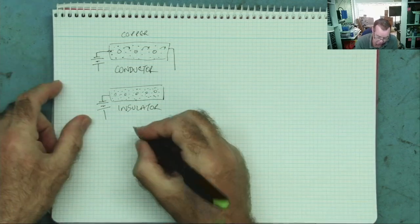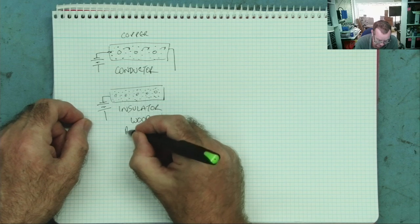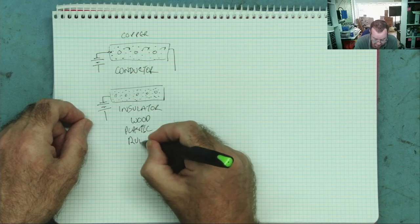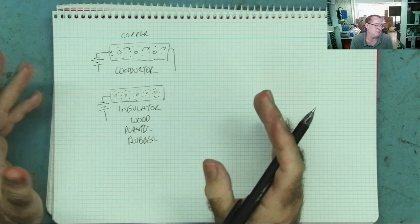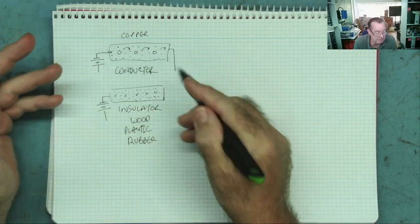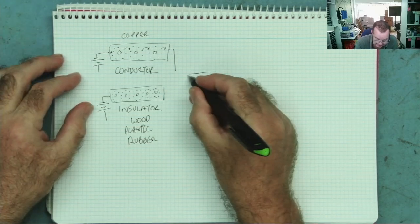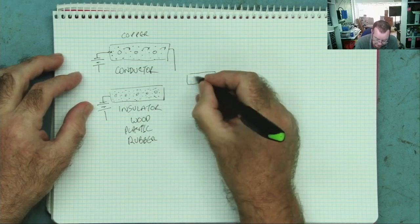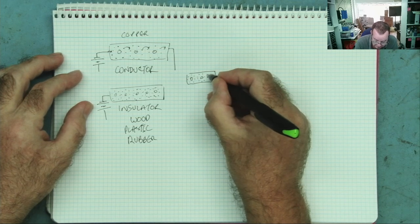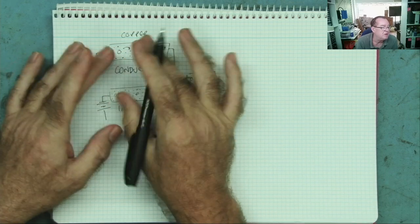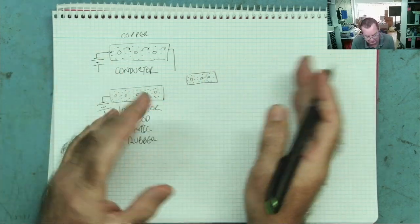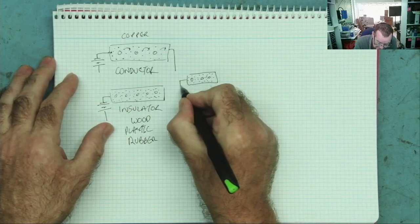Good examples of insulators include wood — although if it's wet, it isn't quite — plastic, and rubber. You'll see these are basically non-metallic substances which are very good insulators. Now in between these two types of substances we get another one — a kind of middle ground. It's somewhere between the two. The atoms have electrons around them that are not free to move like conductors, but they're not locked in place like insulators either.